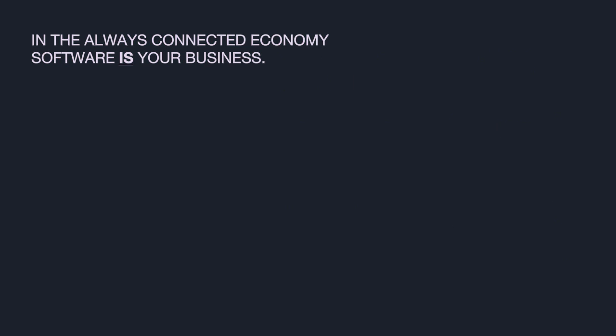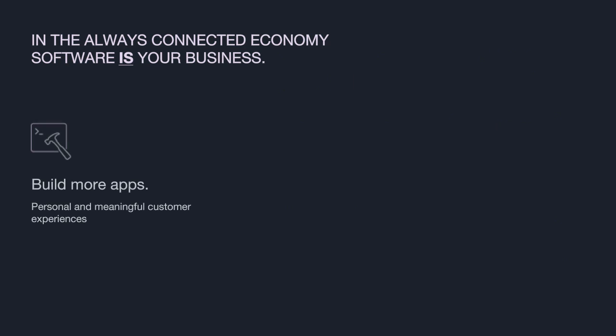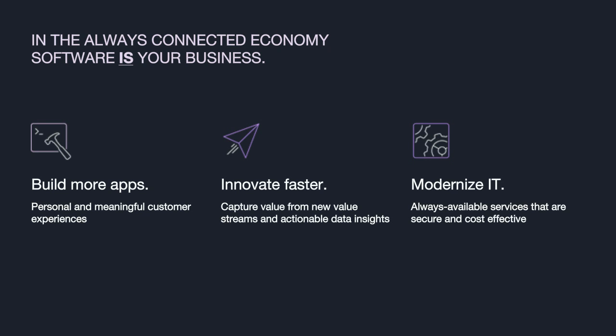So how do businesses need to change the way they're building and operating their applications? First, nearly all the companies that Mesosphere works with are looking to build more applications more quickly and to better engage their customers. Second, companies must innovate much faster than ever before — it's no longer acceptable to roll out a new service or updates every 6 to 12 months. Finally, companies really want to leverage the data they're collecting on user engagement and operational metrics, and do it in a cost-effective manner. IT must be scalable to meet customer requirements, but at the same time, cost-effective and secure.